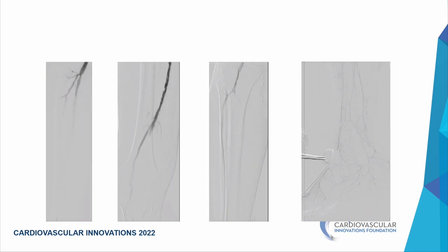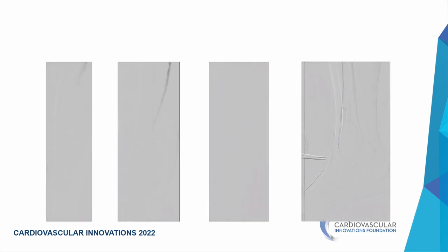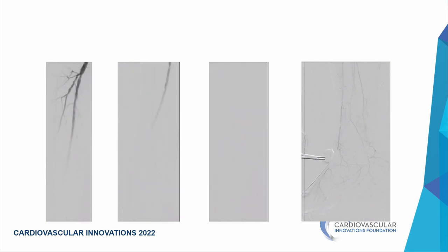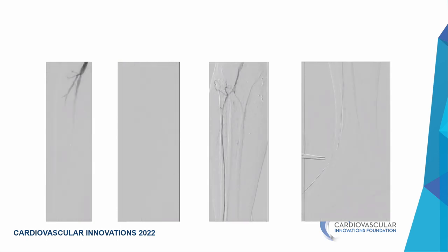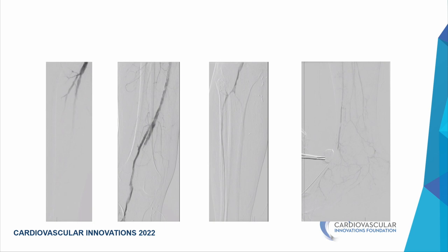The DP looked poor but I believed it was vasospasm after removing the 6-French sheath. We were approximately four and a half hours into the procedure at this point. We decided to stop and bring the patient back in one week.